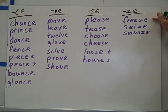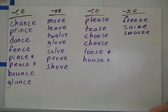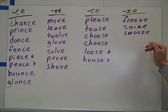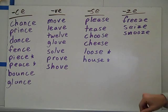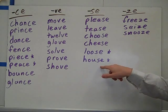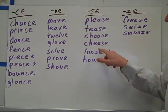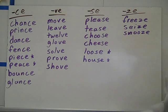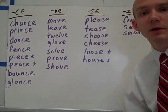Z-E: you have freeze, seize, and snooze to finish up your Z sounds spelled with Z-E. Now these Z sounds are spelled with S-E, so just sort them in the S-E column.